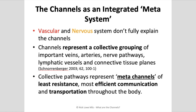Clearly the vascular system and nervous system provide part of the explanation for what the channels are, but neither system fully explains the channels on its own. The best way to understand the channels is that they represent a collective grouping of all the most important pathways in our body — the most important veins, arteries, nerve pathways, lymphatic vessels, and connective tissue planes — representing the sum total of these channels, which travel in very similar anatomical lines throughout the body. These pathways are the meta-channels of least resistance and most efficient communication and transportation throughout our body.